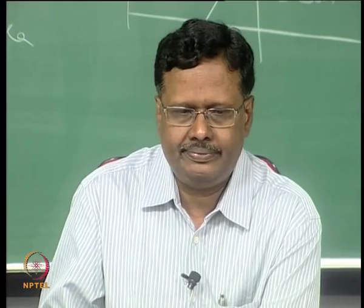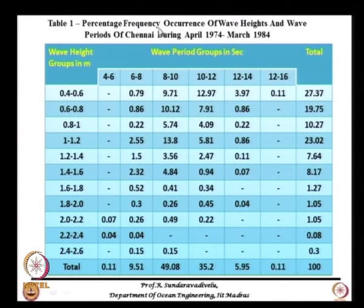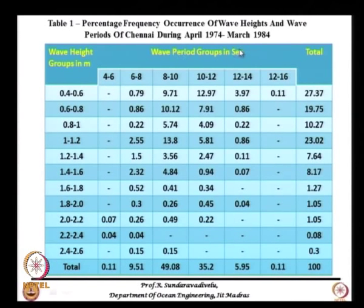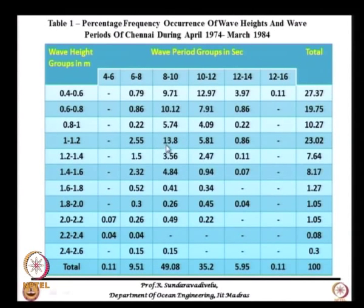If you want to quantify, you can get percentage frequency of occurrence of wave heights and wave periods of Chennai during April 1974 to March 1984. There are two pieces of information: wave height groups in meters and wave period groups in seconds. If it is 0.79 percent, the wave height is in the range of 0.4 to 0.6 meters and the wave period is in the range of 6 to 8 seconds. The maximum is 13.8 percent, where the wave height is between 1 to 1.2 meters and the wave period is between 8 to 10 seconds.